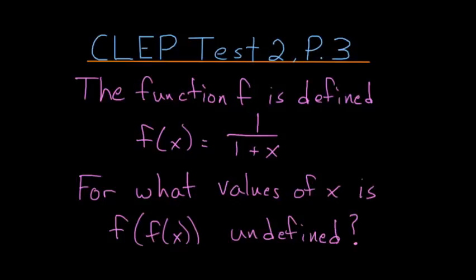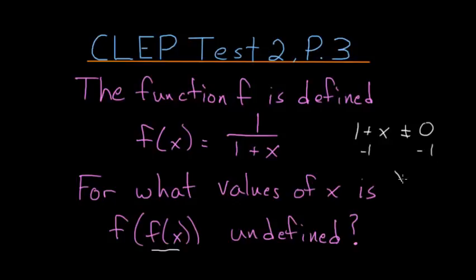Functions aren't defined when their denominators are equal to 0. So for f of x, this inner function, 1 plus x in the denominator cannot be 0. Solving for x by subtracting 1 from each side, we know that x cannot be negative 1. This is part of the solution.